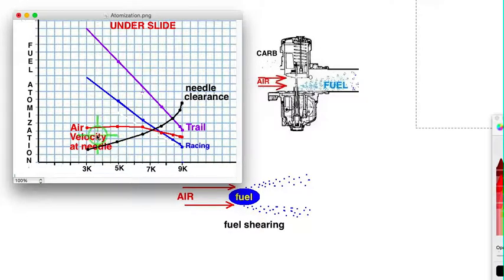My idea of how to get a rough estimation of the fuel atomization is divide the air velocity by the needle clearance, and that gave me these two graphs right here, which just struck me as not being right. There's too much variation between high atomization at low rpm and low atomization at high rpm, which is the opposite of what you want.